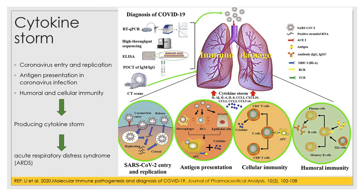The process of coronavirus entry and replication, the production of antigens in the human body, and the activation of humoral and cellular immunity systems produce a large amount of cytokines. When overwhelmed, this is known as a cytokine storm — a deadly condition of uncontrolled systemic inflammatory response resulting from the release of large amounts of pro-inflammatory cytokines and chemokines. This leads to acute respiratory distress syndrome, known as ARDS, and can produce multiple organ failure, ultimately leading to death in severe cases of SARS-CoV-2 infection.